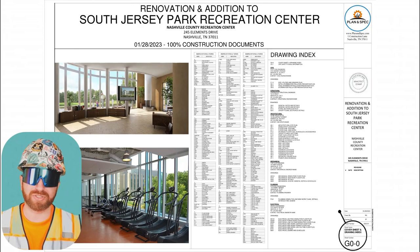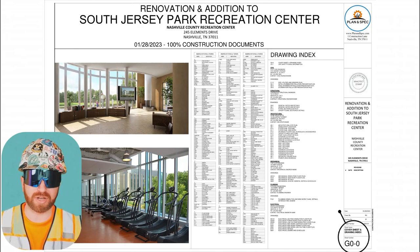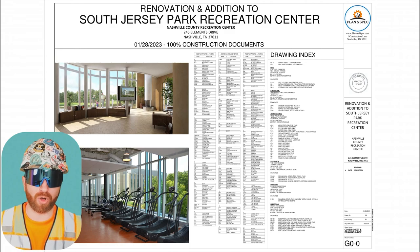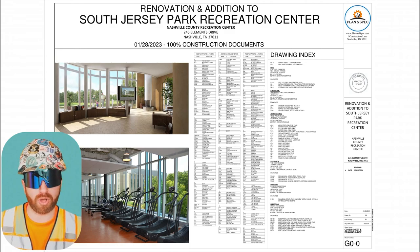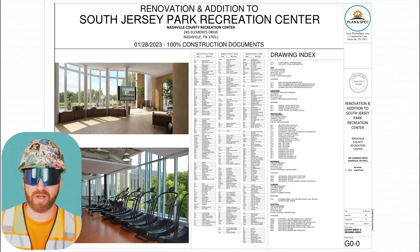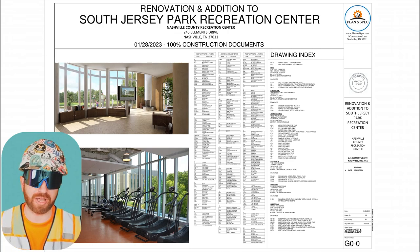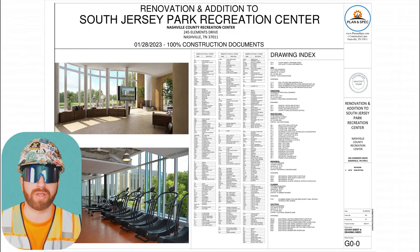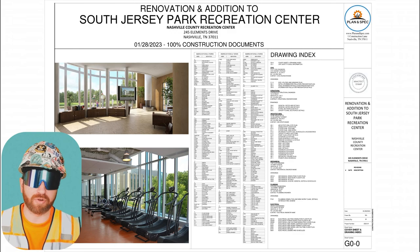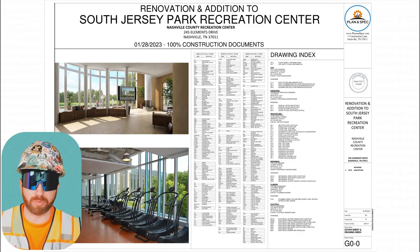Today we're going to focus on the general series which both commercial and residential construction drawings usually have. This section might not always be called the general series — I'll show you an example of that later in this video. This section is found at the front of most drawing sets and is essentially a title or cover page to summarize the construction project. The general series or cover pages is the first section I always look at when reviewing a new set of construction drawings.